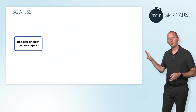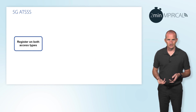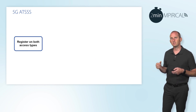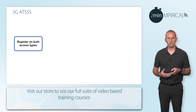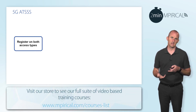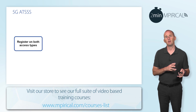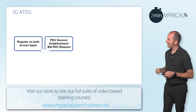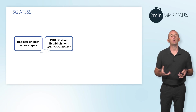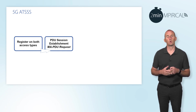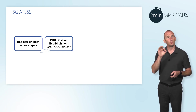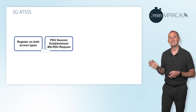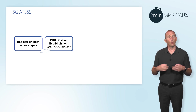In terms of the process behind utilizing ATSSS, the device first needs to conduct a registration on both of the different access types — a registration on new radio and also a registration on Wi-Fi. After that, it can then go on to send a PDU session establishment request to the network.